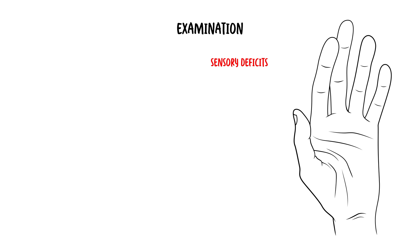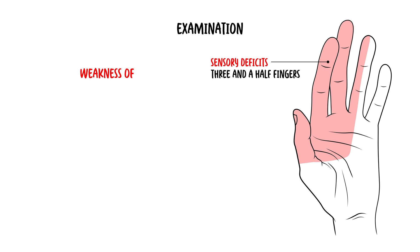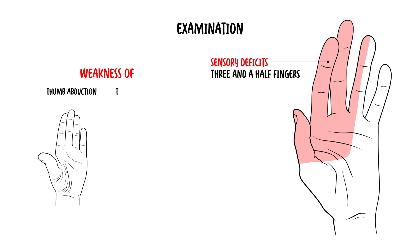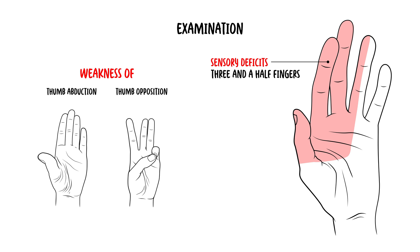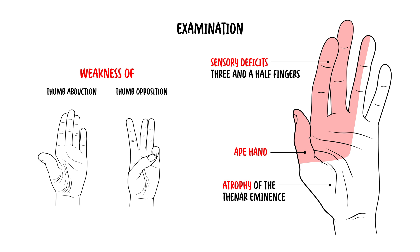On examination of carpal tunnel syndrome, sensory deficits usually occur late in the course of the condition and involve the first three and a half fingers, but spare the thenar eminence. Weakness occurs in thumb abduction and thumb opposition, which can also lead to ape-hand appearance. Atrophy of the thenar eminence may be present because many muscles here are innervated by the median nerve.